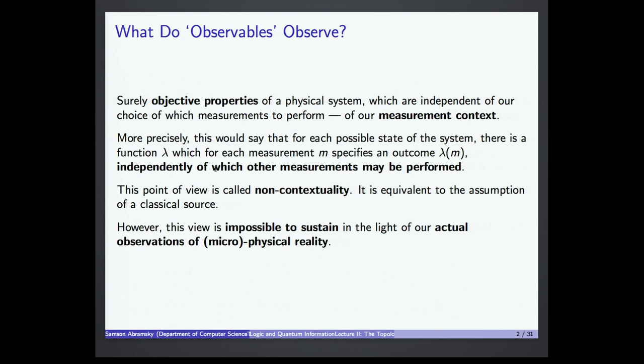What lambda is could itself be chosen according to some probability distribution — there could be a stochastic process driving what we see — but the space over which this stochastic process ranges is globally assigning well-defined values to all the variables we could measure. This is the idea of non-contextuality, and it's this view which is impossible to sustain in the light of our actual observations of reality at the microscopic level, as we were discussing yesterday with the impressive experiments that have now been performed.